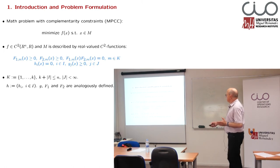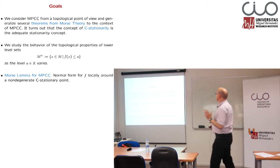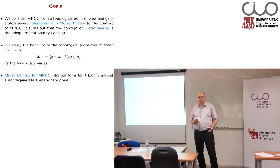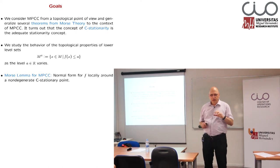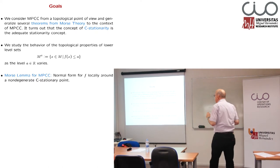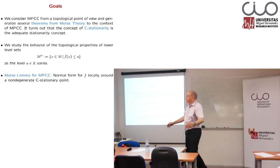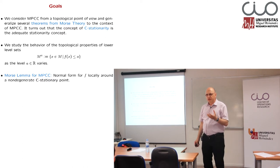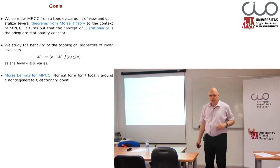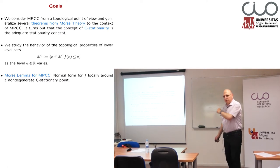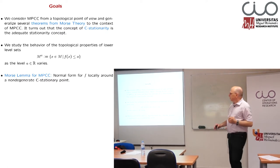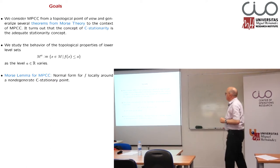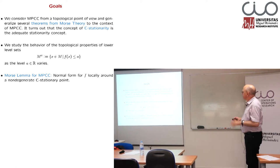What we are looking at is the following goals. We will look at these mathematical problems with complementarity constraints from a topological point of view, in the following sense. We are asking, generally, how can we generalize the results from Morse theory? Morse theory is a very old topic from the 1960s. I will make in the next slide a picture in order to be more familiar with this idea.